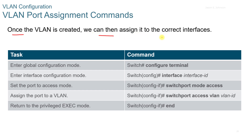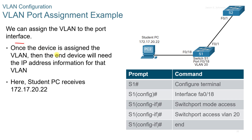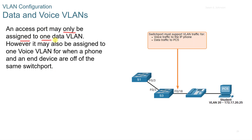Once the VLAN is created, assign it to the correct interface. Use config terminal, specify the interface, use the switchport mode command, set the VLAN ID, and then use the end command. Once the device is assigned to the VLAN, the end device will need an IP address for that VLAN — in this example, 172.17.20.22. An access port may only be assigned to one data VLAN; however, it may also be assigned to one voice VLAN for when a phone and an end device share the same switch port.